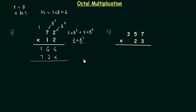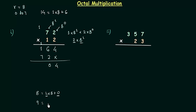Now we will add these results. In this column we only have 4. 6 plus 2 is 8, and 8 is not an octal number, so we have to break it: 1 multiplied by 8 plus 0. 0 is the sum and 1 is the carry. 1 plus 1 is 2, and 2 plus 7 is 9. 9 is again not an octal number, so we will break it: 1 multiplied by 8 plus 1. So 1 is the sum and 1 is the carry.